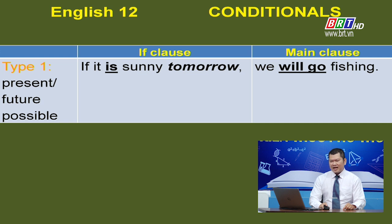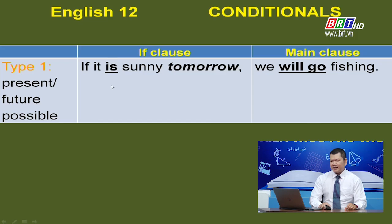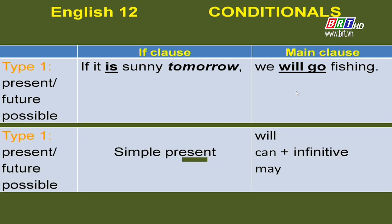Type 1 conditional. We use the Type 1 conditional to talk about an event or situation that the speaker thinks can actually happen. Please pay attention to the verb forms in both the if-clause and the main clause. In the if-clause, the verb is in the present tense. In the main clause, the verb is in the simple future tense (will + infinitive). Instead of 'will,' we can use 'can' or 'may.'